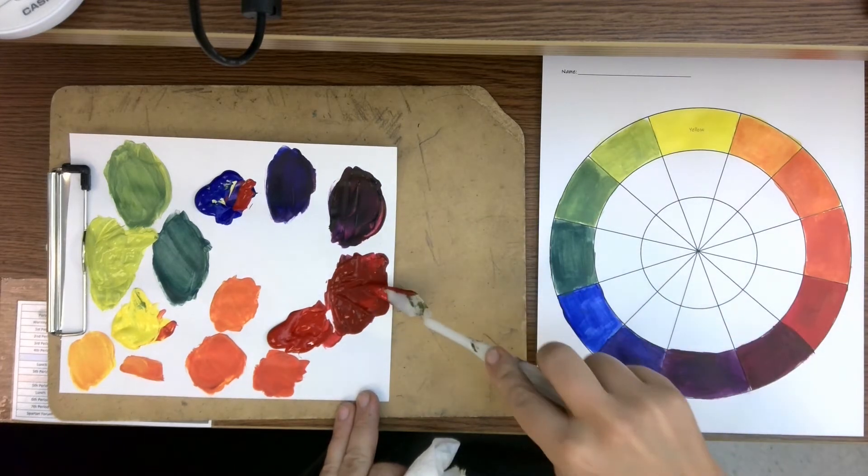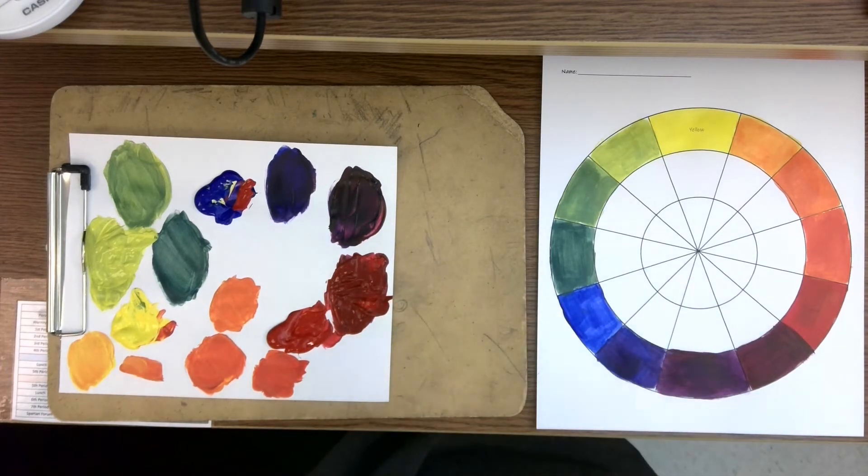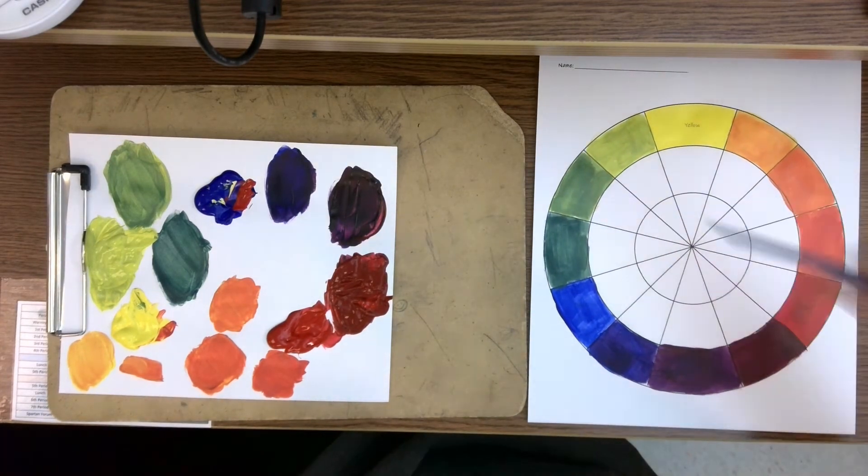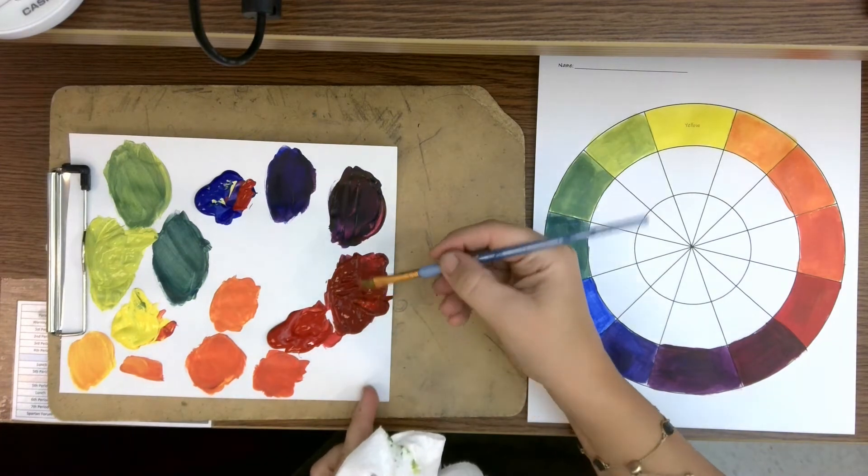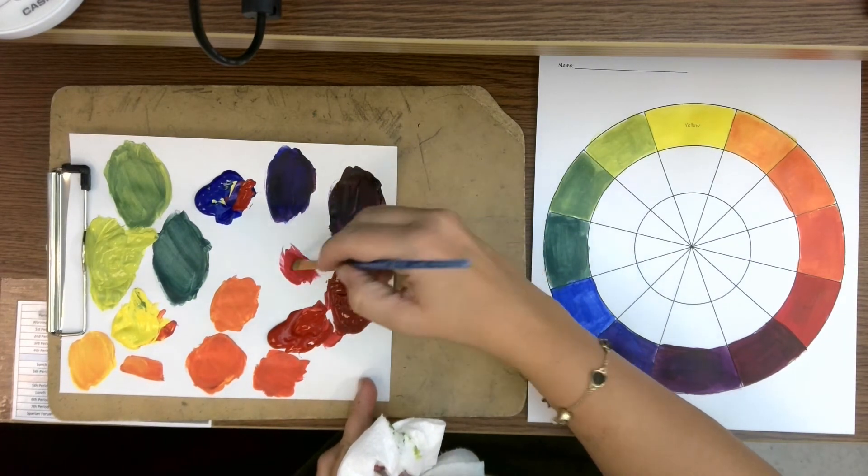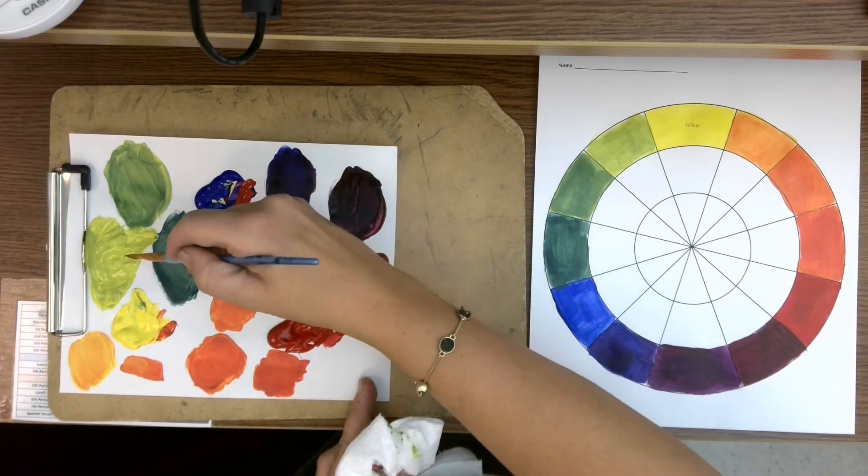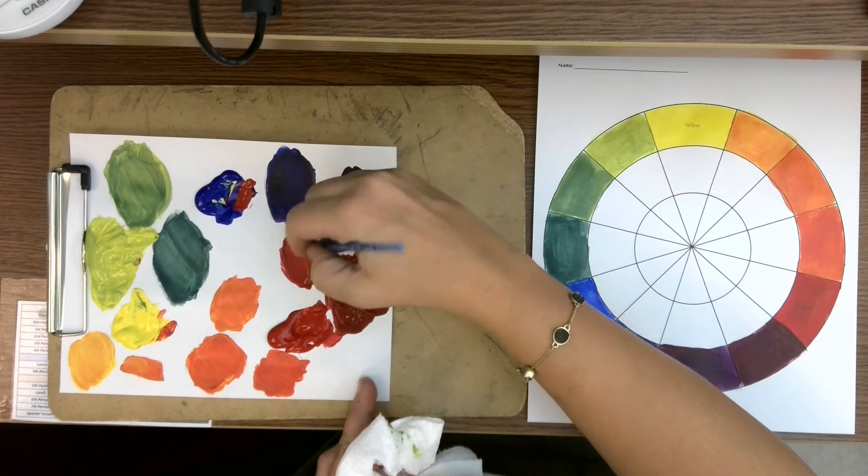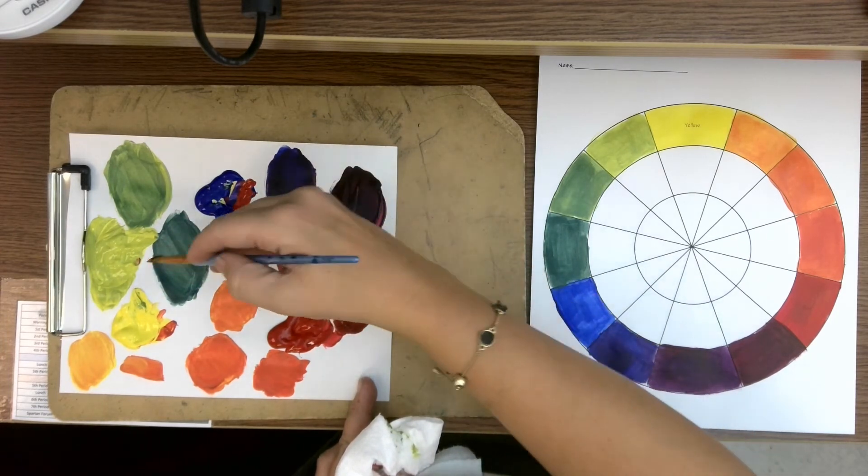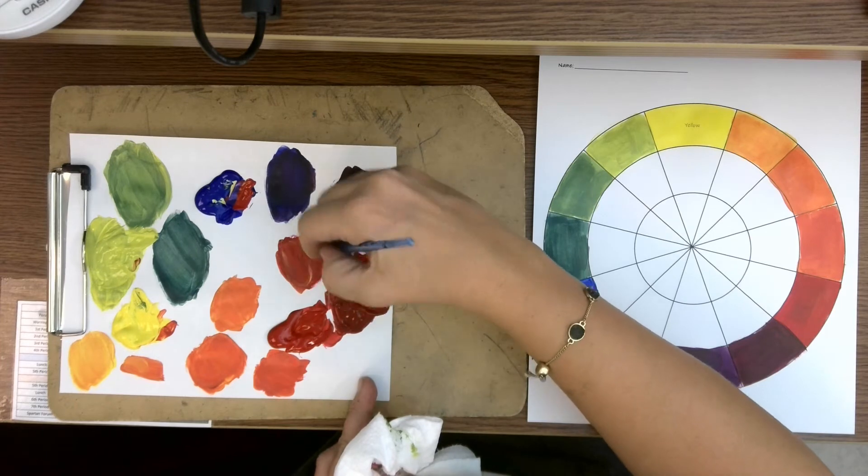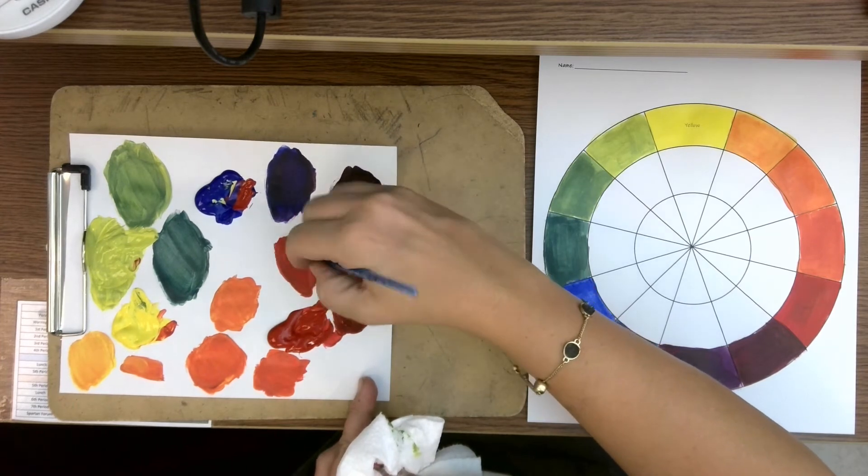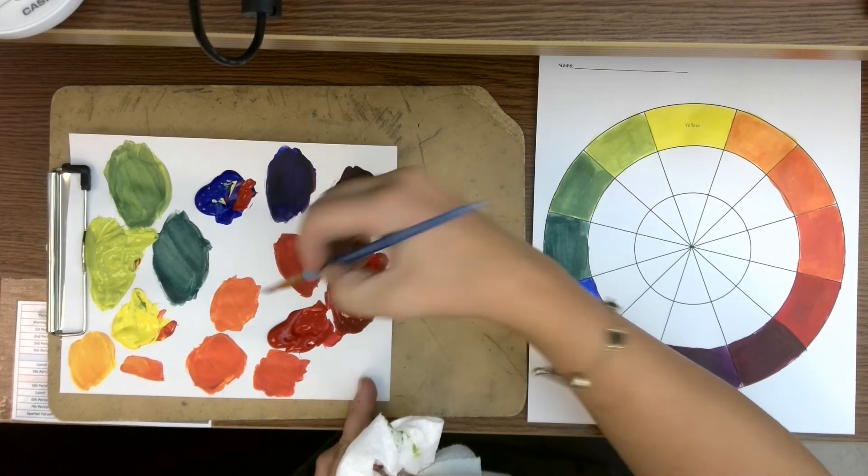And I think that's pretty close. Okay, so now that I have my two piles, now I can come up with my four mixtures. So I'm going to have mostly red violet with a little bit of my yellow green.